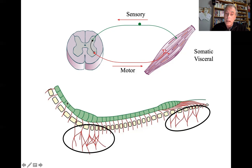Remember that there are eight cervical spinal segments. However, there are just seven cervical vertebrae. For the rest of the spinal cord, there will be as many spinal segments as vertebrae.